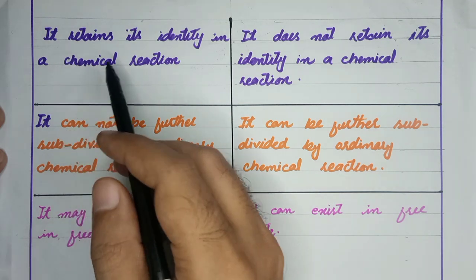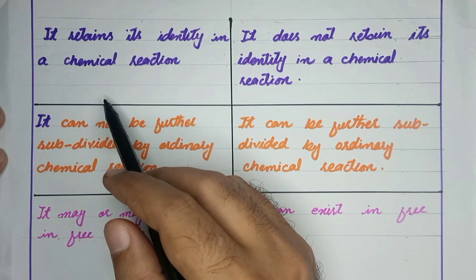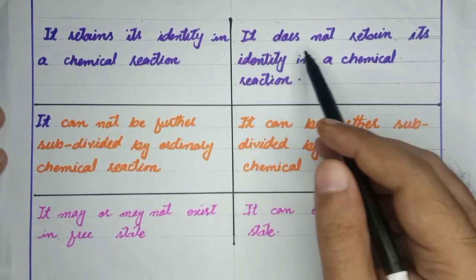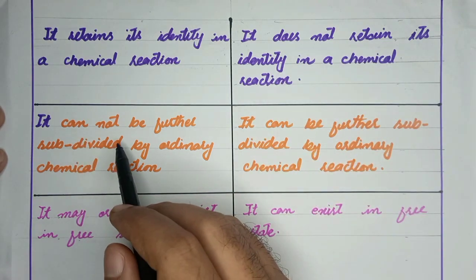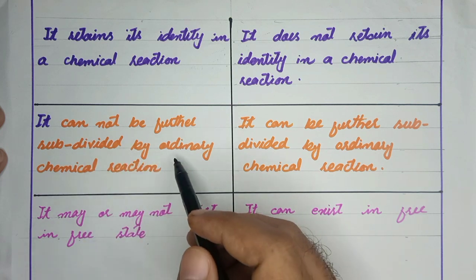The molecule does not retain its identity in a chemical reaction. The atom cannot be further subdivided by ordinary chemical reaction.